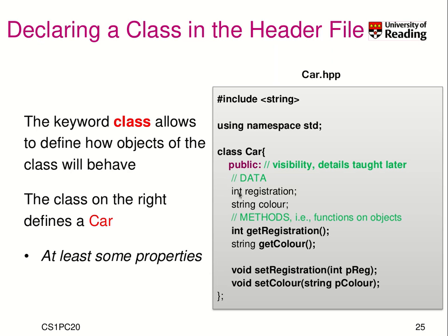In terms of data, we need registration and color, declared here similar to a struct. Then we define our methods: get registration to get the plate number, get color to get a string of the color, set registration to set a new registration number, and set color to set the new color. These are our methods, and this is our data — so we've modeled it.